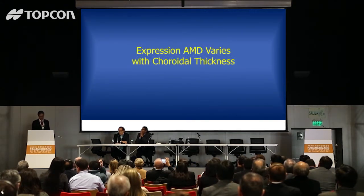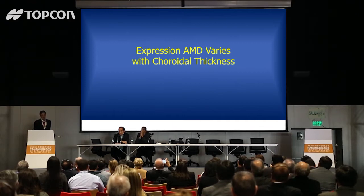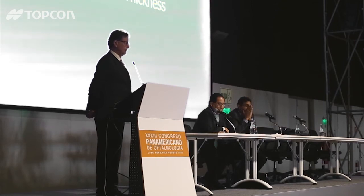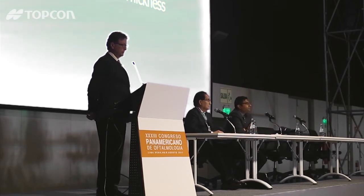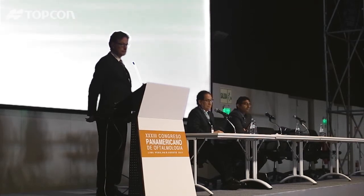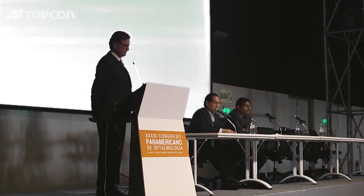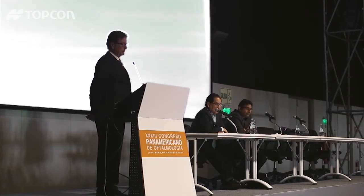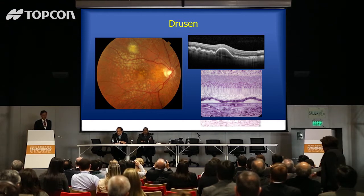I'm going to talk about using OCT to grade non-exudative early AMD — early and intermediate AMD — and look at how that varies by choroidal thickness. I think now we can make a staging system for non-exudative AMD using OCT, whereas in the past they used color photography, which didn't image a lot of what's going on. Gass really was the one who figured out what choroidal neovascularization was in AMD in the 1960s, and he found that drusen were a risk factor.